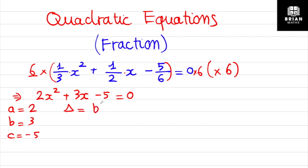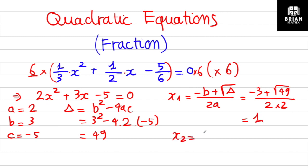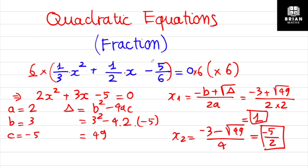Using the discriminant formula: b² minus 4ac = 3² minus 4 times 2 times (negative 5). We get 9 plus 40, which equals 49. For x₁: negative 3 plus √49 divided by 2 times 2 equals negative 3 plus 7 over 4, which equals 1. For x₂: negative 3 minus 7 divided by 4 equals negative 10 over 4, which equals negative 5/2.